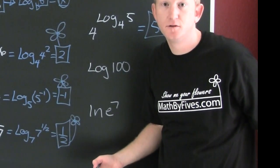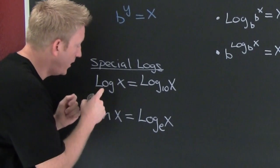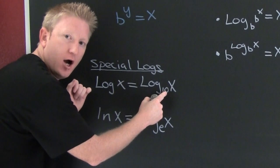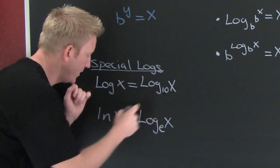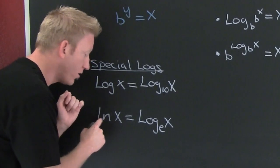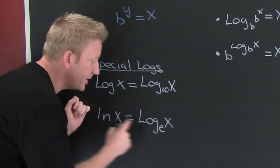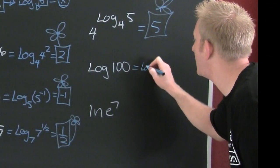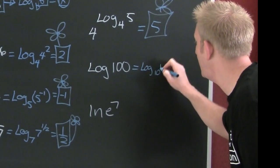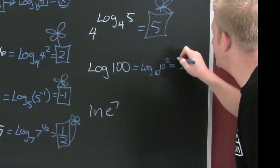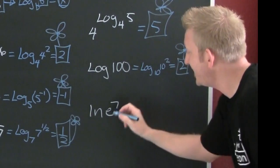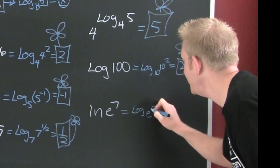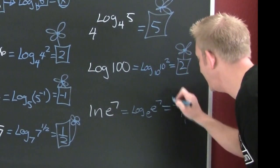Here we need our special logarithms. Special logs? Yeah. If there's no base written, it's log base 10. Your common logarithm. We're on a base 10 system. The natural log, ln, log natural, is really log base e of x. Great. So we see this is log base 10 of 10 to the 2. 2. You're done. Down here. This is log base e of e to the 7. It's 7. And you're done.